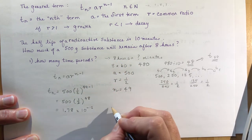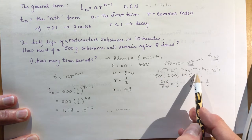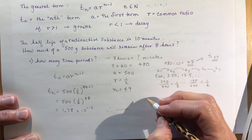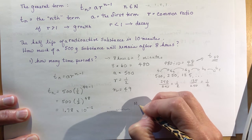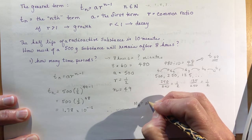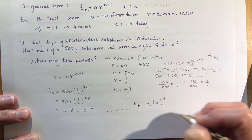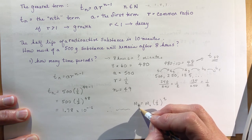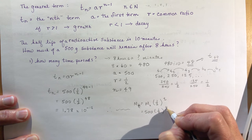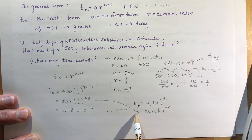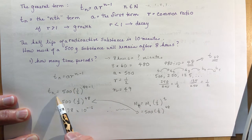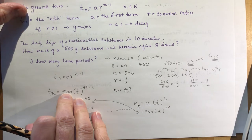That would be the grams remaining — a very, very small number. Note: using the old exponential formula, mass at time t equals initial mass times one half to the power of t, you would write 500 times one half to the 48th — same result, because the sequence formula subtracts 1 from n to account for term numbering.